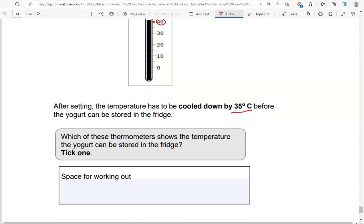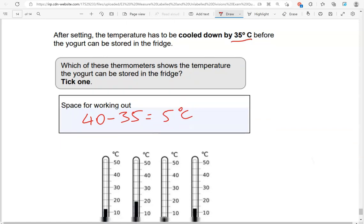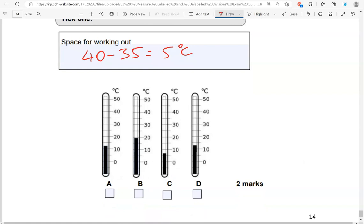And then it has to be cooled down by 35 degrees Celsius. So 40 take away 35, which is 5. So we're looking for a thermometer that shows 5 degrees Celsius, or about 5. A shows over 10 degrees Celsius. B shows just under 20. C shows under 10, something close to 5 degrees Celsius. So C is the correct one. And then D, that is higher than 10. So the only correct option is C.